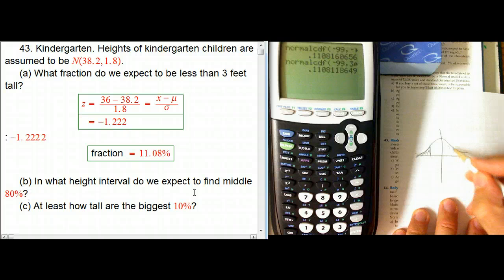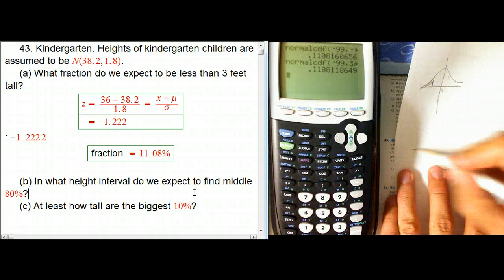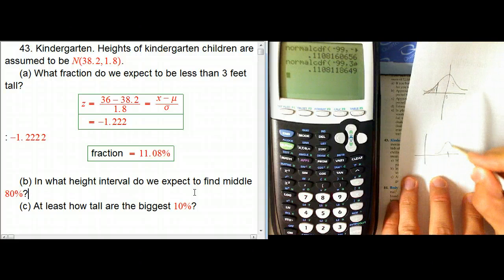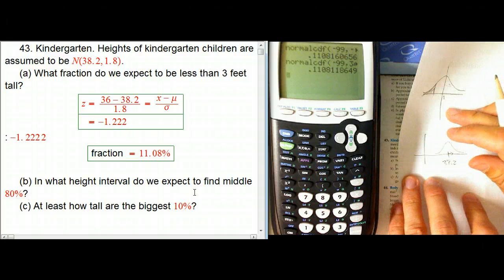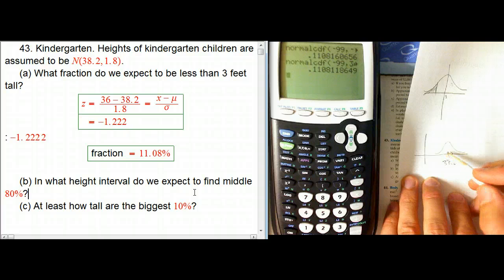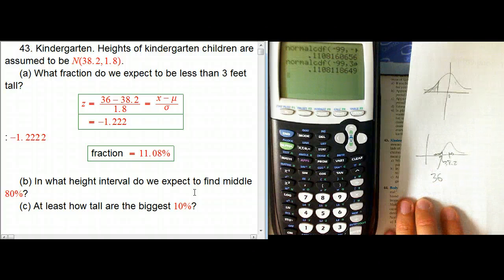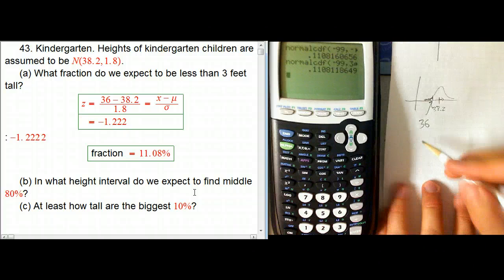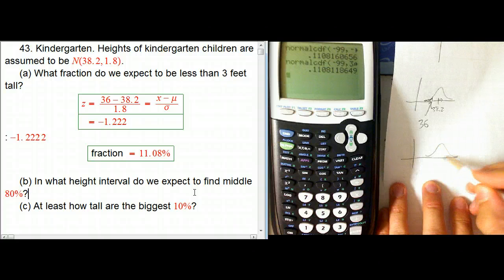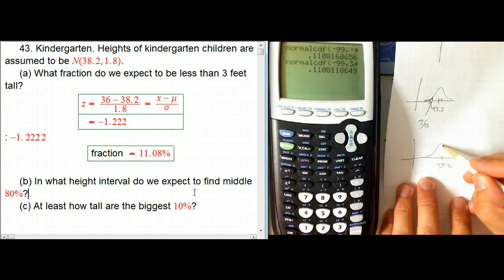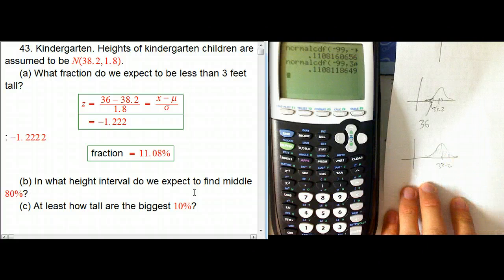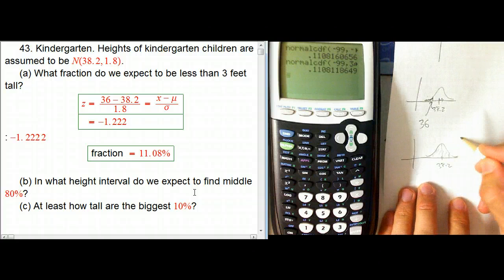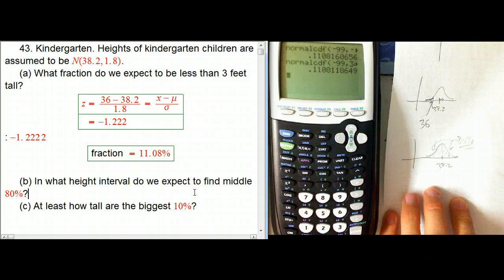That was for the standard normal where the mean was zero. The second version, where we used the fancier calculator command, looked at our actual normal distribution centered around 38.2 with a standard deviation of 1.8, and we found the tail up to 36. Now for the middle 80%, same distribution with mean 38.2, we're looking for the central region.